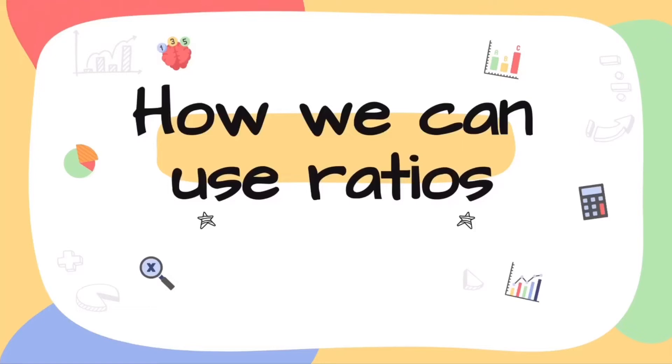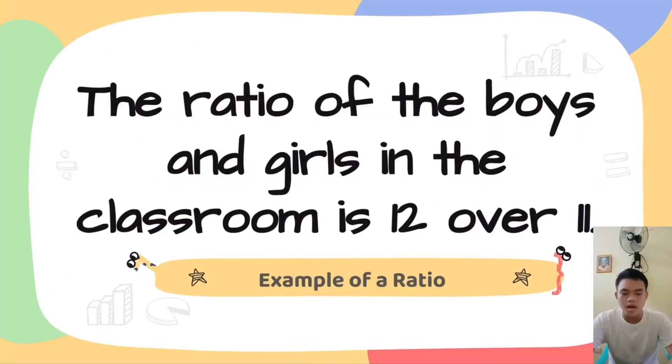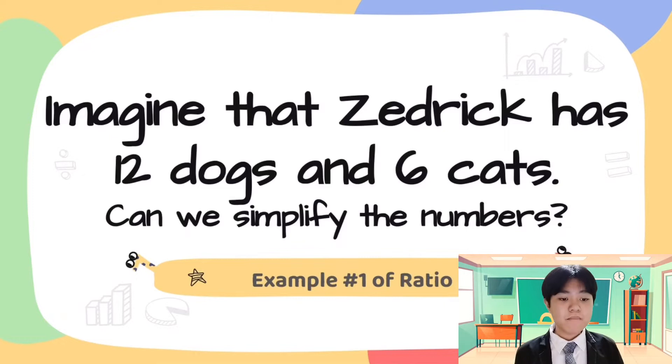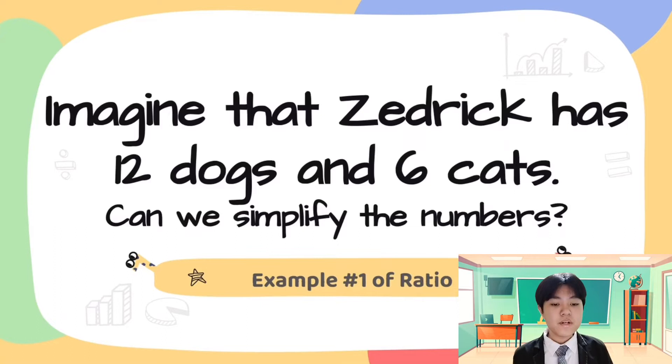So Leandro, can you please read the example on how we can solve or use the ratio? The ratio of the boys and girls in the classroom is 12 over 11. So Blessie, what have you noticed in the given fraction, which is 12 over 11? Teacher, I've noticed that it is already in a simplified form. How was it done? Okay, so here's my example on how we can solve ratios. Look on the presentation. Imagine that Zedrick has 12 dogs and 6 cats. Can we simplify the numbers?